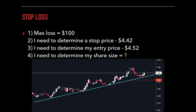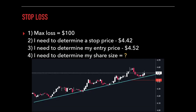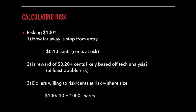Before we can think about buying, we need to do the last step: determine the share size. To do this, we need a little math. How much do we plan to risk? $100. How far away is our stop price from our entry price? Our entry is $4.52 and our stop is $4.42 — the difference is $0.10. So we are risking $0.10 per share on this trade.